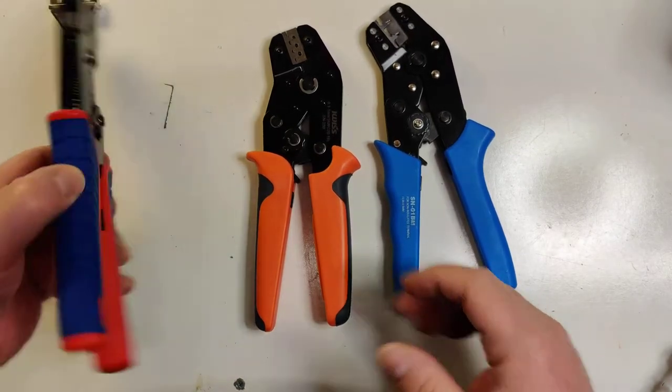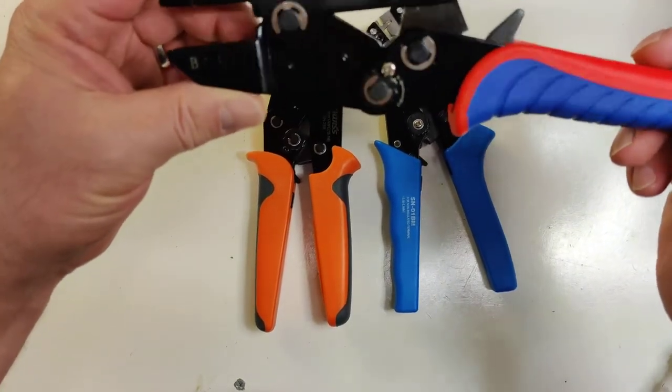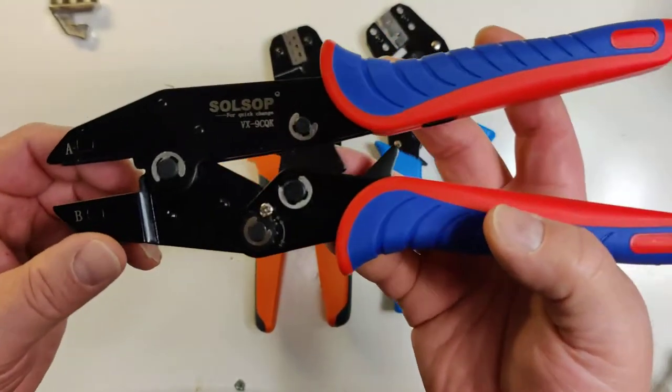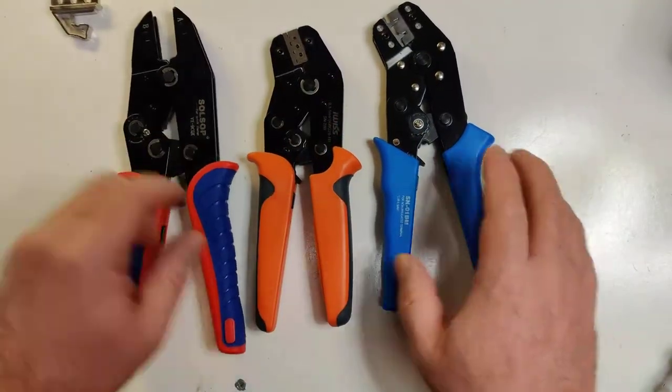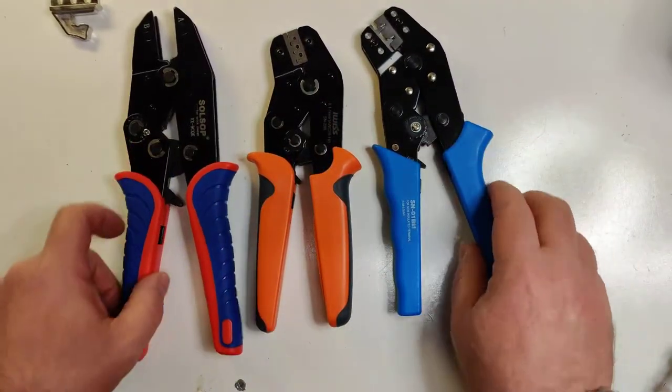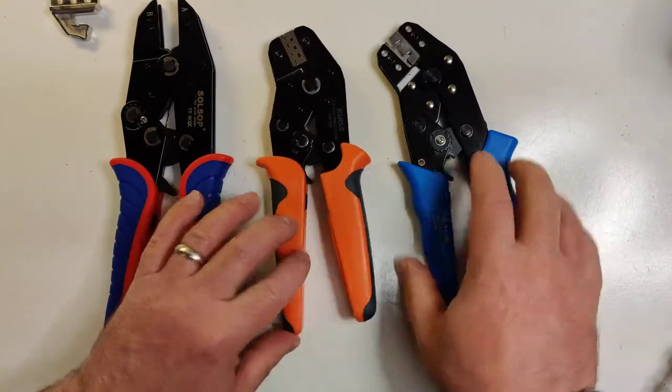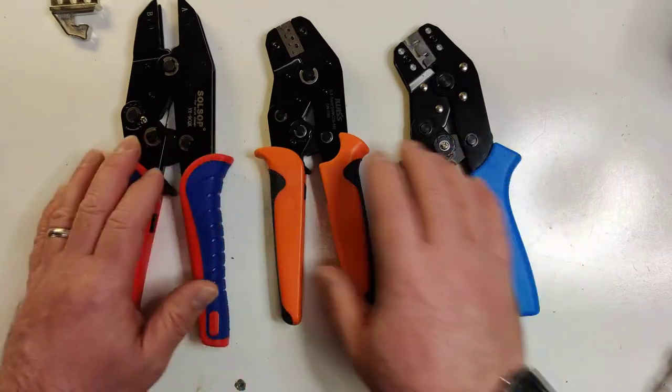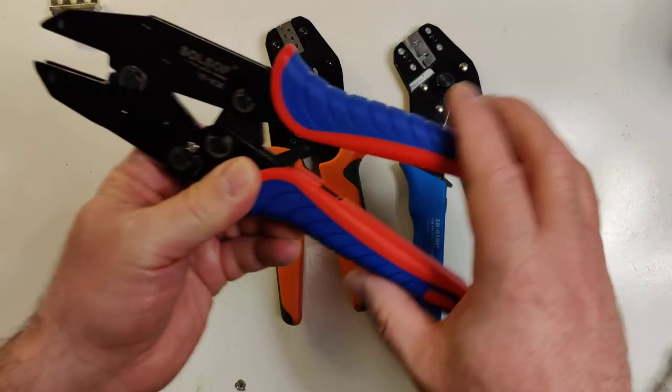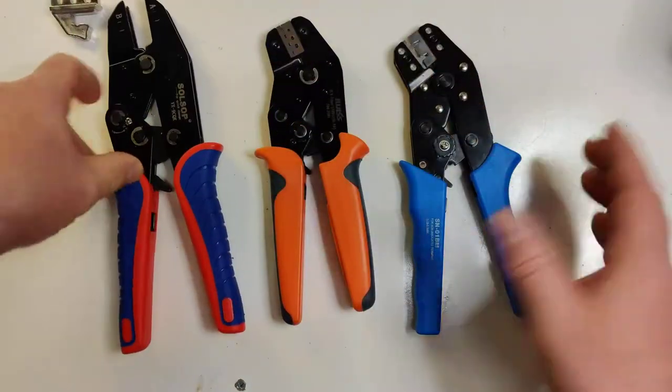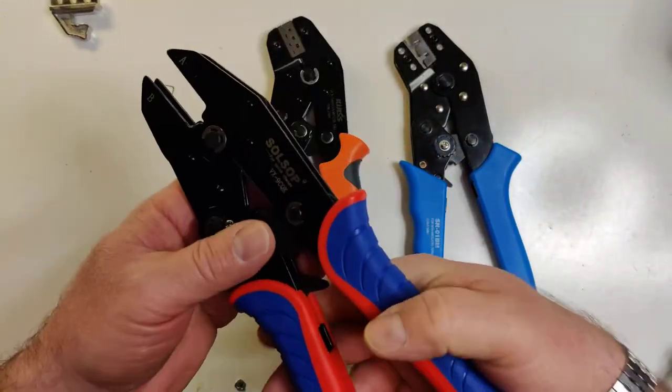So what interested me in the SolSop crimpers here is that I needed something that was going to let me crimp larger connectors than the two existing ones that I have. This is the O1B and this is the 28B that I use for the JSTH connectors, Molex, DuPont, that kind of thing. And I wanted something that's a much larger crimper so I can crimp larger connectors.